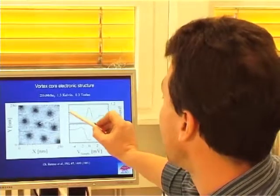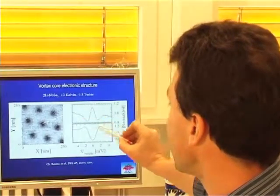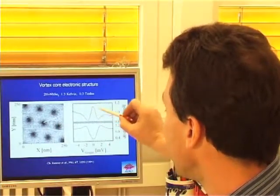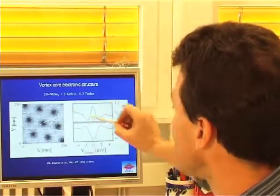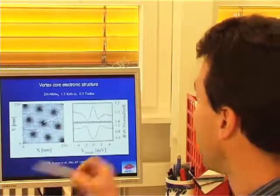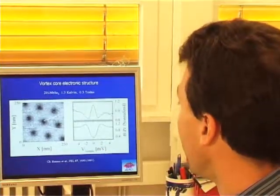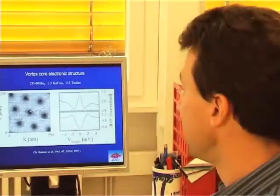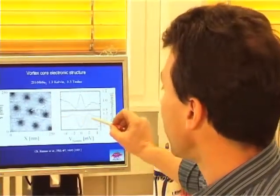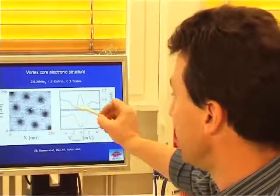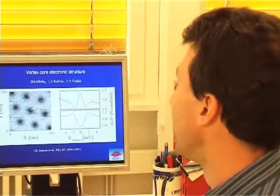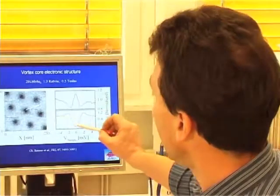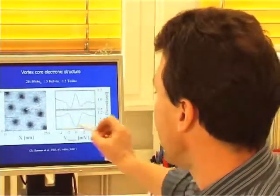And the signature of these bound states can be measured with a scanning tunnel spectroscopy and appears as a big, broad zero bias peak at low voltage. When you try measuring the spectra outside the cores in between the vortices, you get the typical superconducting characteristics with a peak at the position of the delta, the gap of the superconductor, and a reduced conductance at zero bias.